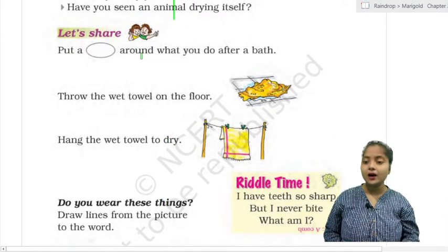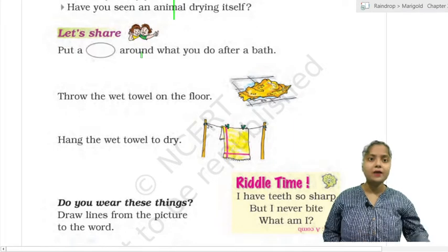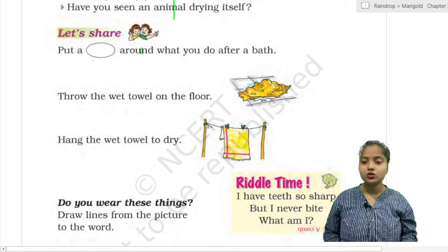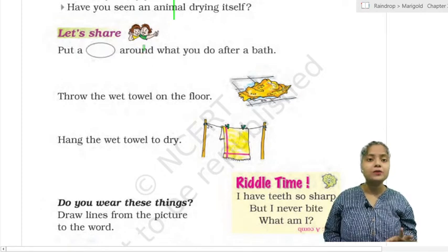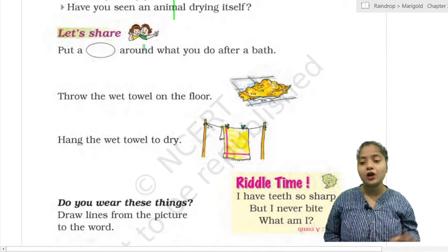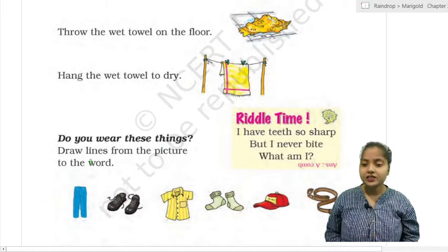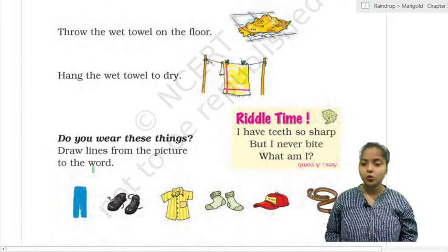Have you seen an animal drying itself? Let's share. Put a circle around what you do after a bath. Throw the wet towel on the floor. Hang the wet towel to dry. Draw lines from the picture to the word.